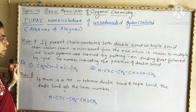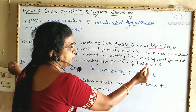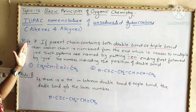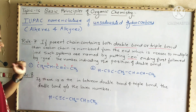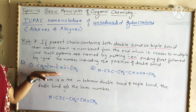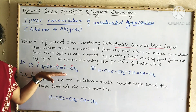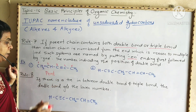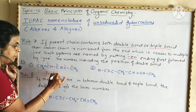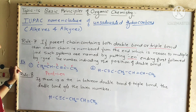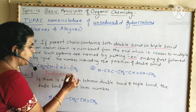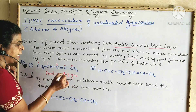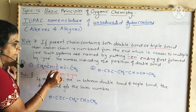Such systems are named by writing the -en- ending first followed by -yne, with the number indicating the position of the double bond placed before -en-. In this five-carbon example, -ane from pentane is replaced by -en- and -yne. The double bond is at position one and the triple bond at position three, so the name is pent-1-en-3-yne.